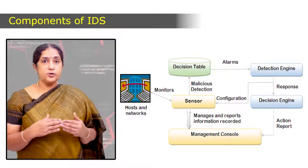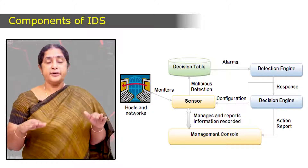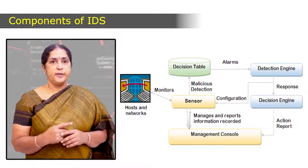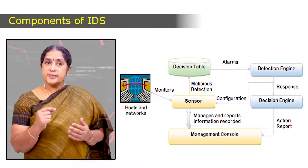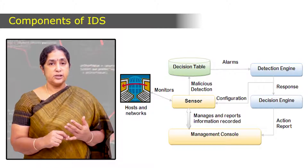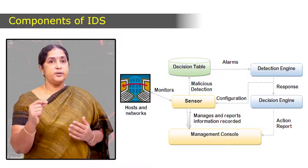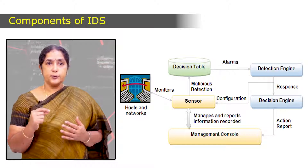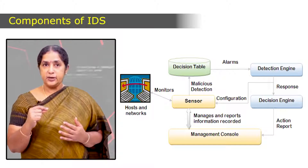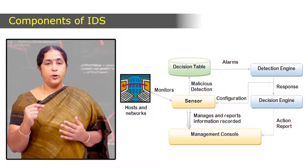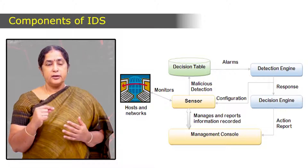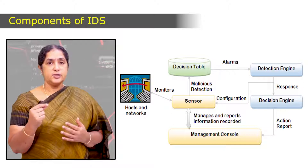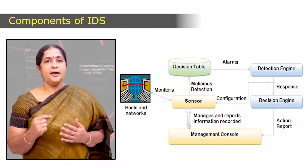Sensors can also be configured for different types of responses. For example, the sensor can reset a TCP connection by sending a TCP FIN command. It can modify the access control list on the gateway, the router, or on the firewall. They can also send an email notification to the administrator for appropriate actions.